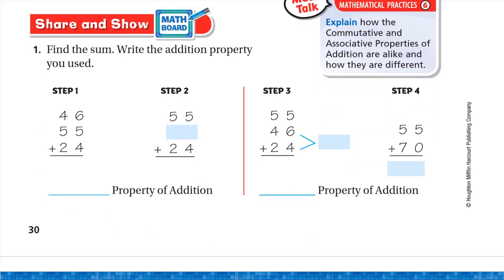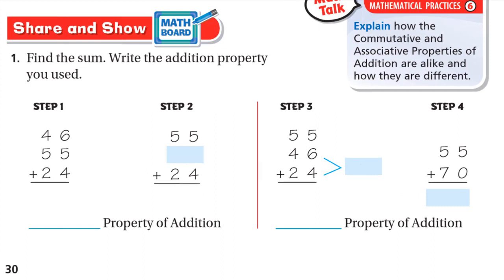For Share and Show: find the sum of 46 plus 55 plus 24, and write which addition property was used. The numbers are reordered as 55, then 46, then 24 — changing the order means we're using the commutative property. The reason for this change: look at step three — to add the 6 and 4 together, because 6 plus 4 is 10. We look at the ones digits and find two that add up to 10.